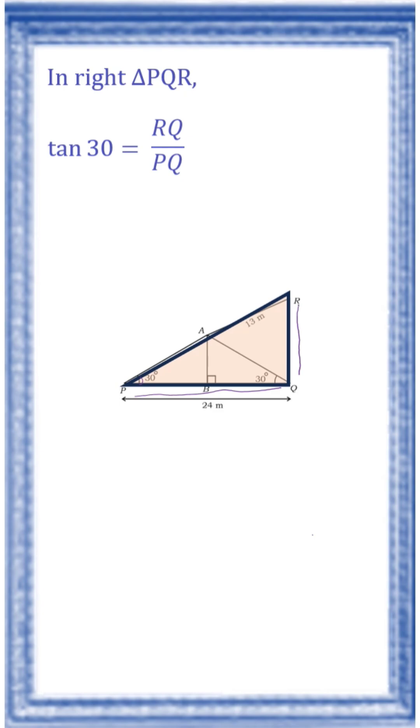Tan 30 is 1 by root 3. RQ we have to find out. PQ is 24 meter. So RQ is equal to 24 by root 3. Rationalize the denominator. So RQ is equal to 8 root 3 meter.